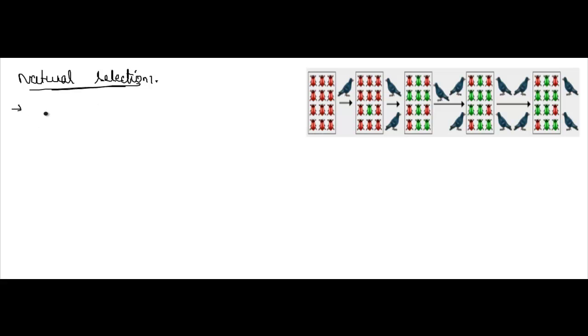So if we see in this case, so basically the characteristics, the characteristics which help individual organisms to survive and reproduce. Help in reproducing and surviving.